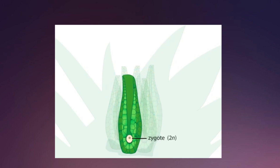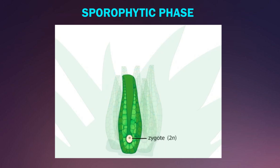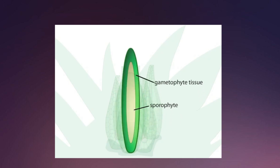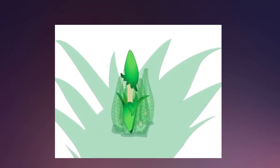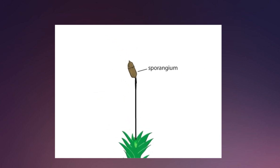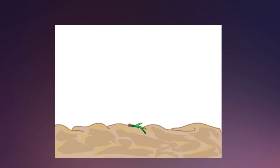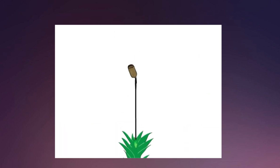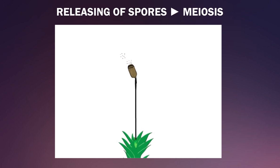With the formation of zygote, the sporophytic phase starts. The zygote is a diploid cell and develops into a stalk-like structure which has spore capsules. When the sporophyte matures, it releases spores and again the gametophytic phase starts. The releasing of spores from the sporophyte is called meiosis.